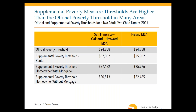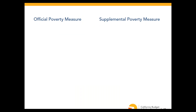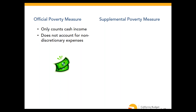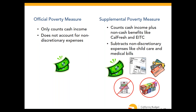The third major shortcoming of the official measure is that it defines family resources very narrowly — only cash income like wages and cash benefits such as CalWORKs grants or Social Security, and does not account for non-discretionary expenses. The supplemental measure counts a much broader range of resources, including non-cash benefits like CalFresh and tax credits like the Earned Income Tax Credit, while also subtracting non-discretionary expenses such as childcare costs and out-of-pocket medical expenses. This means the supplemental measure compares a family's net resources (resources minus expenses) to the poverty threshold, providing a better picture of what families actually have to meet basic needs.